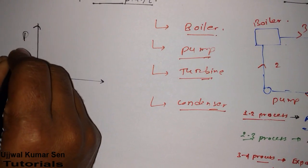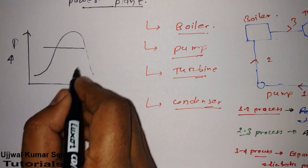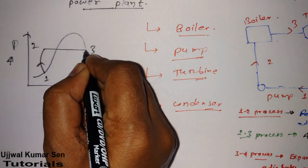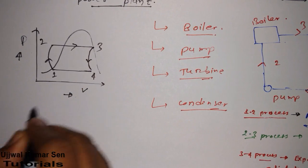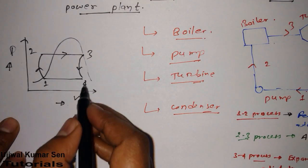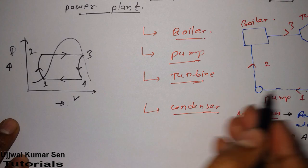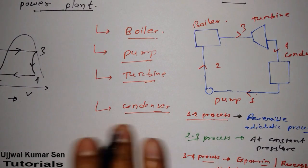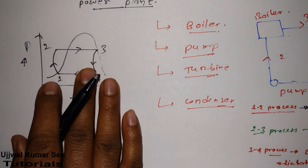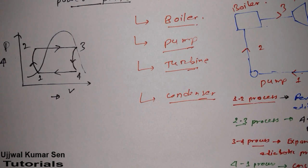We'll start with the PV diagram — P for pressure, V for volume. In the PV diagram: from 1 to 2, the pump is there; from 2 to 3, there is constant pressure — that is the boiler; 3 to 4 is the turbine; and 4 to 1 is again constant pressure — that is the condenser. If you remember these four steps, you can quite easily draw the PV diagram.